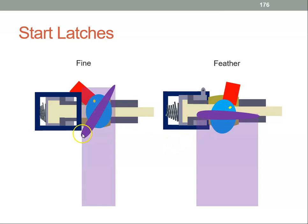What would be desirable is that when we're on the ground and we deliberately shut the engine down for the night, the propeller doesn't go beyond, say, a super fine position. So how can we do that? We do that with start latches.